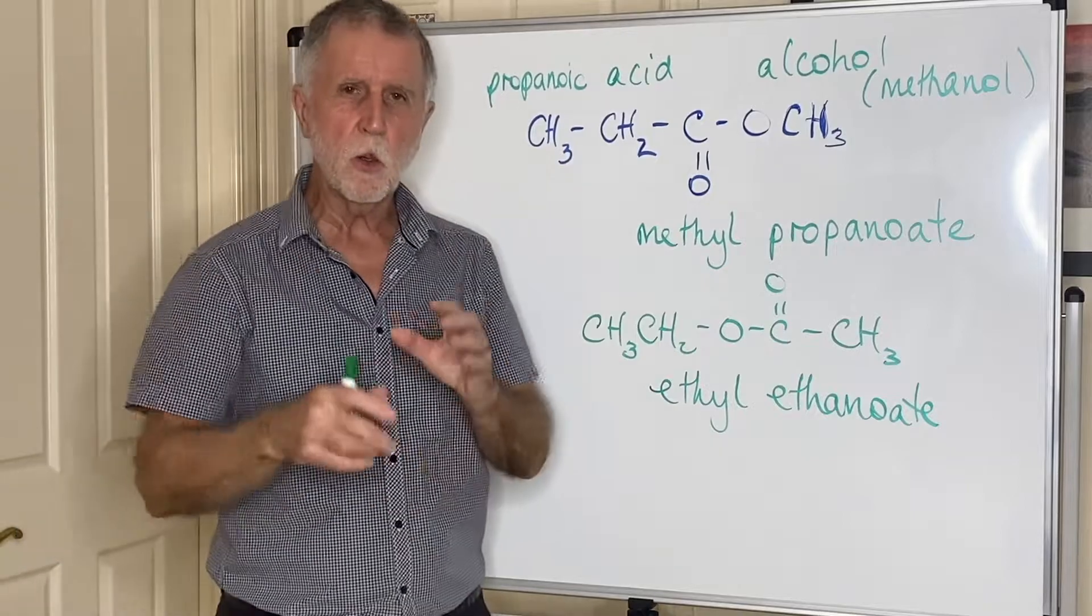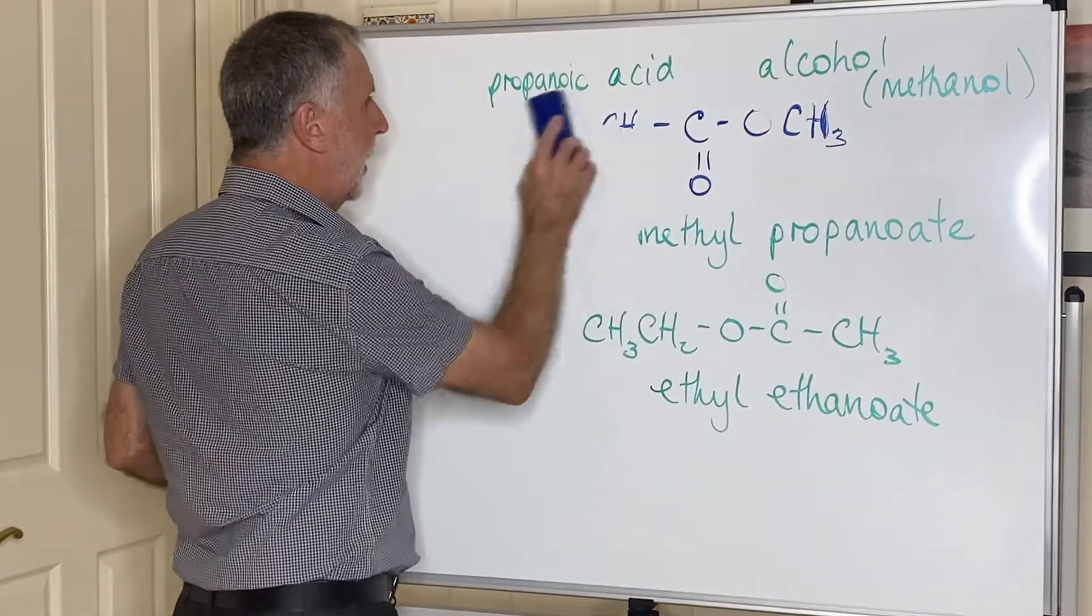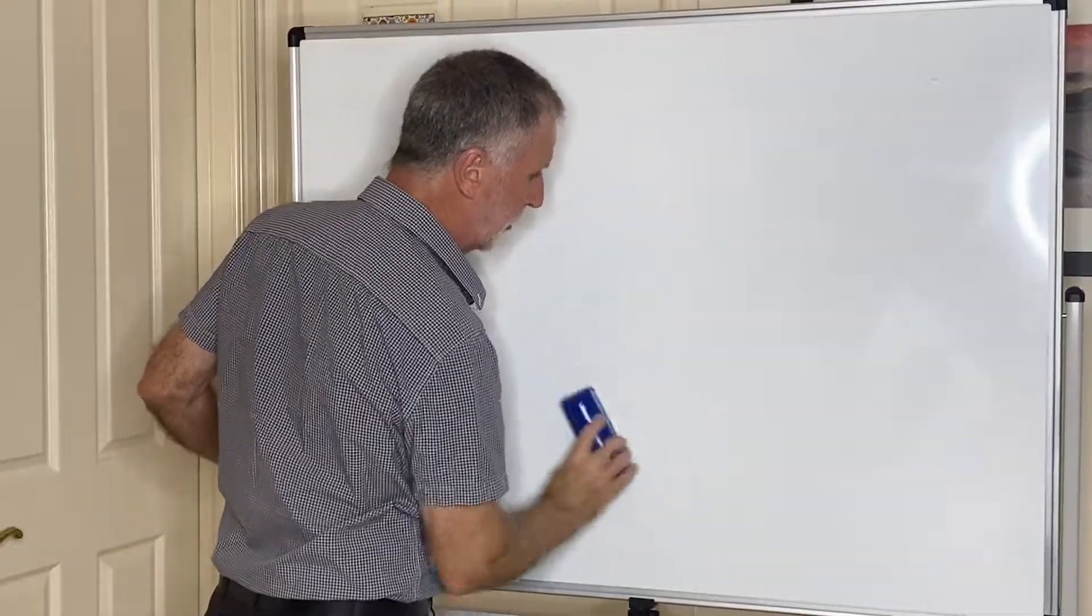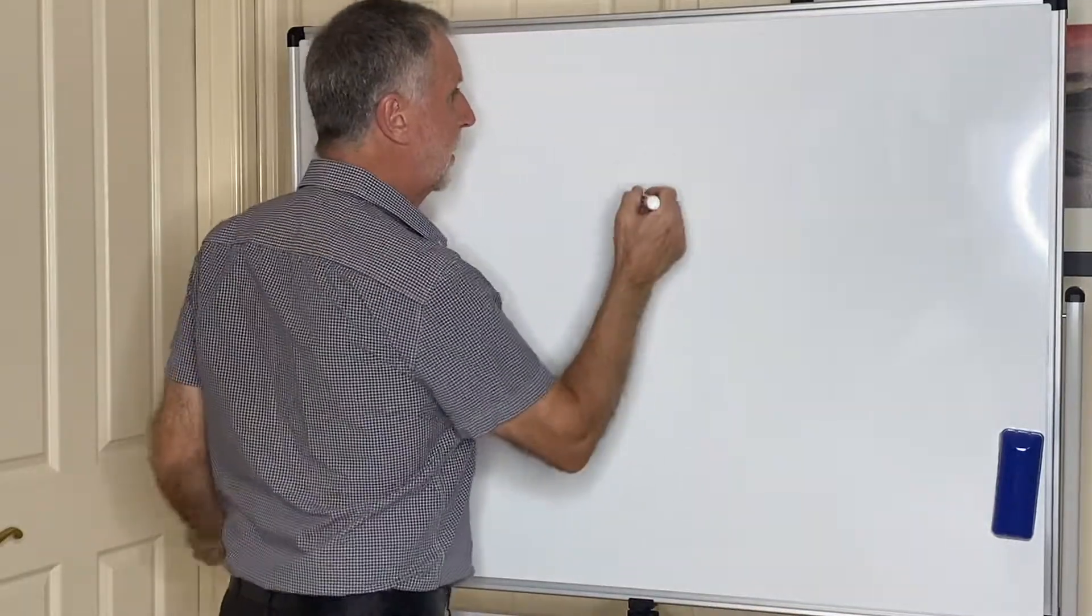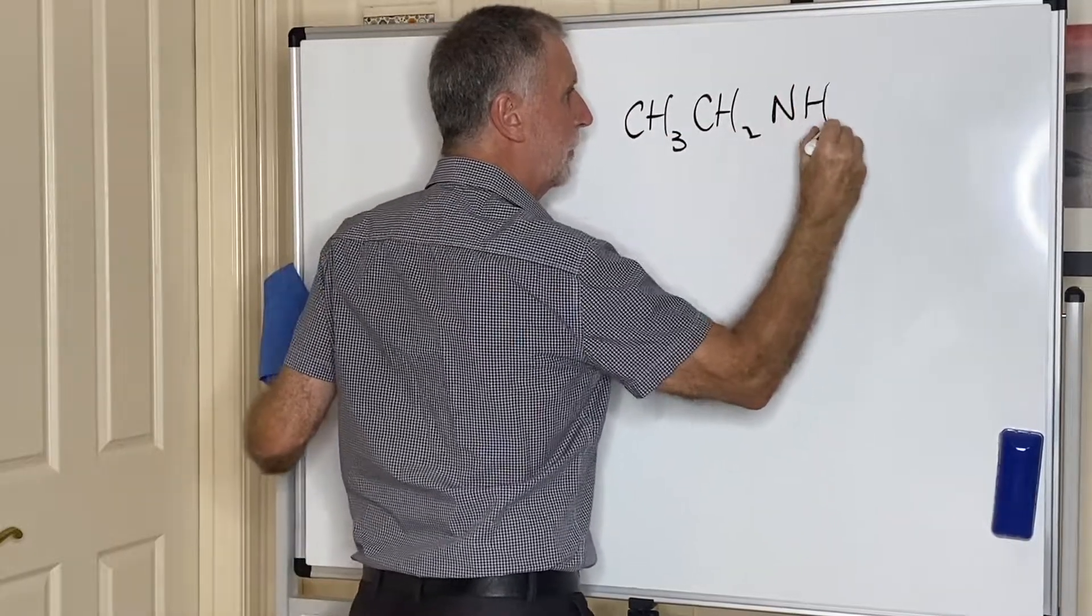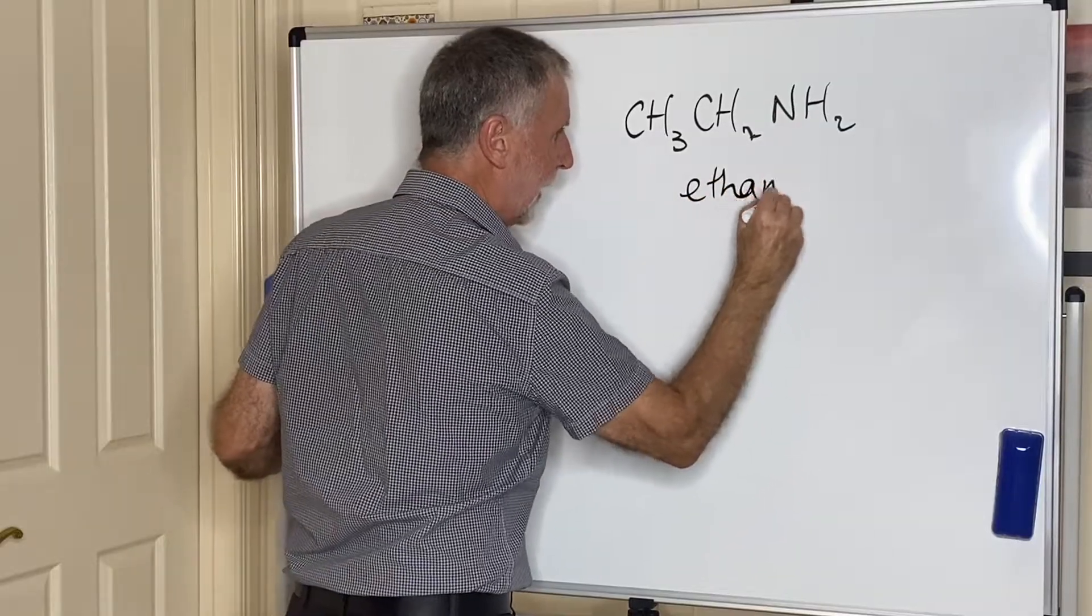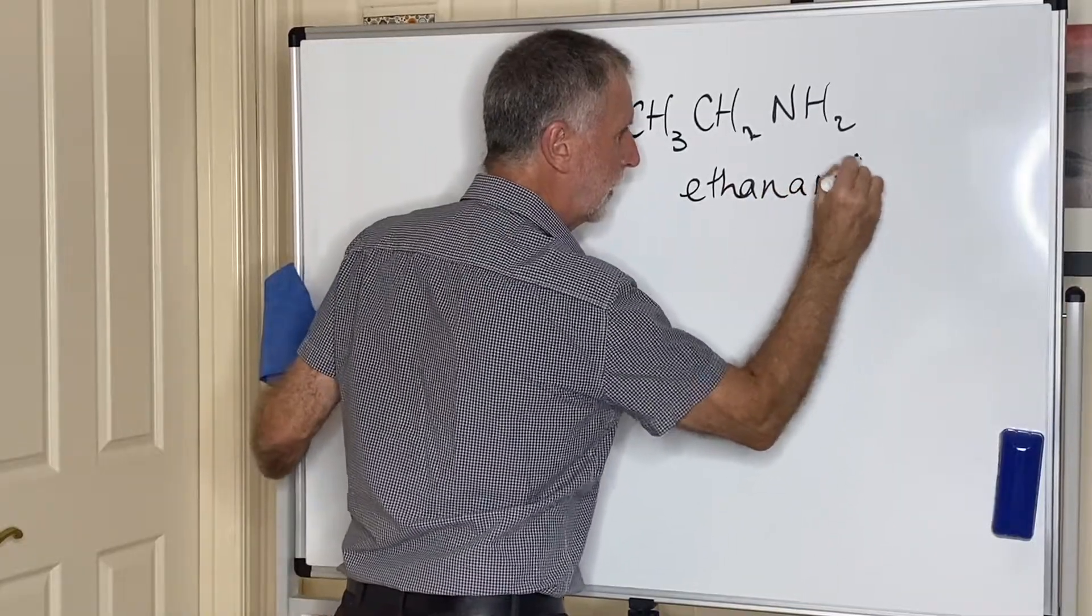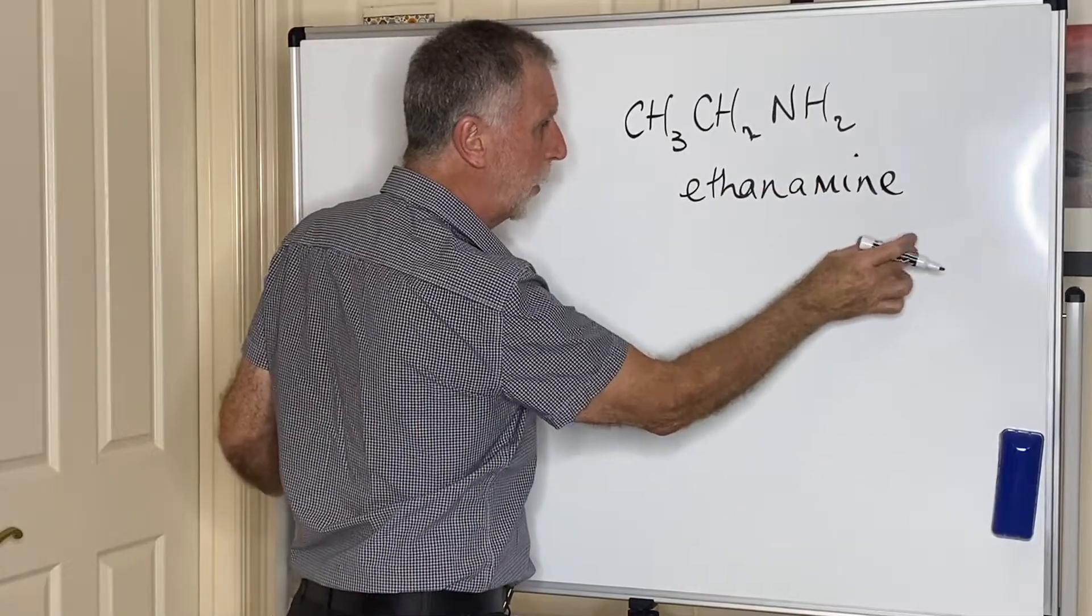There'll be lots of practice of these and all the other functional groups in the question book that I'm producing. The three remaining ones are the ones that contain nitrogen. The first of them are the amines: CH₃CH₂NH₂. The number of carbons is two which gives us ethan, drop the E and add the ending -amine, ethylamine. If you go to three carbons you need a number like propan-1-amine or propan-2-amine.